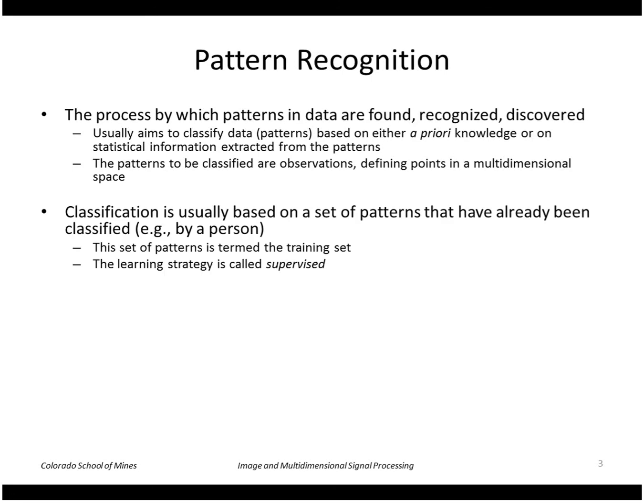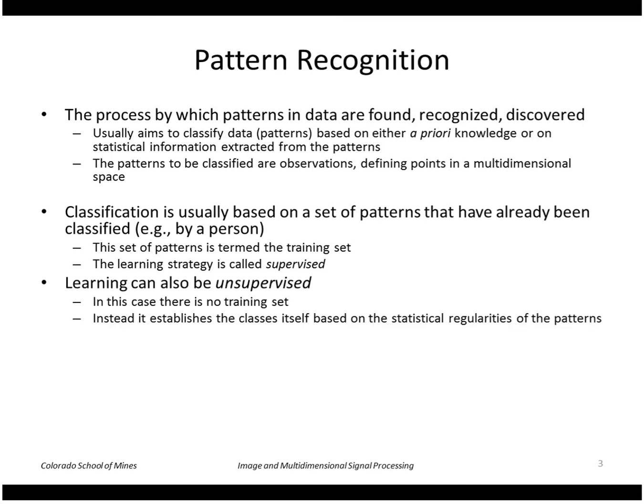Often classification is based on a set of patterns that have already been classified by a person. This set of patterns is called a training set, and this strategy is called supervised learning. But learning can also be unsupervised. In this case there is no training set; instead, the system establishes the classes itself based on the statistics of the patterns.